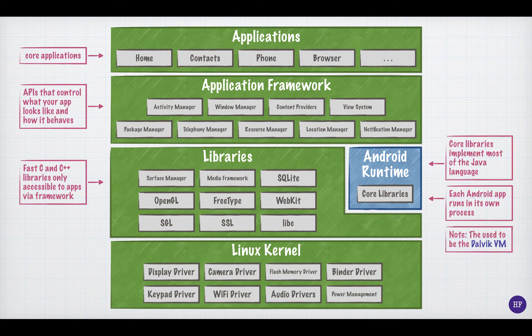The application runtime contains the virtual machine that runs your application. Before Android 5, the Dalvik virtual machine ran your Android program. The Android runtime has improved performance over the Dalvik VM. The Android runtime also contains the core Java libraries needed to run your application — in other words, the libraries that are typically included with Java. In contrast, the application framework contains Java libraries that are specific to Android applications.